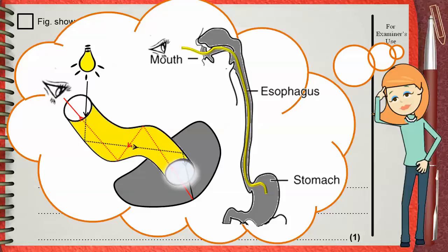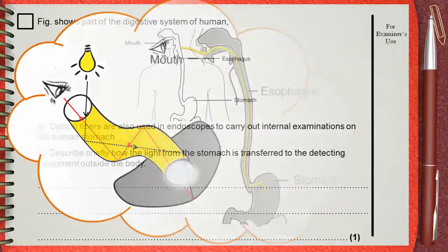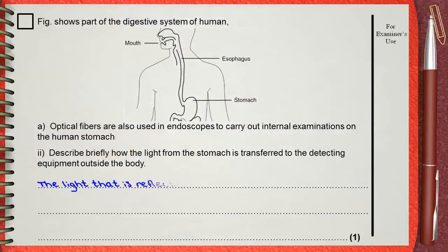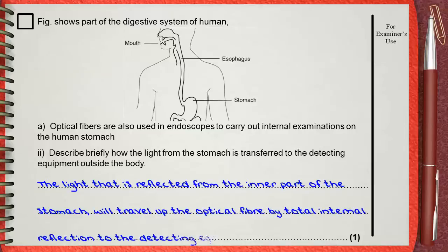This is how we can see the inside of the stomach. So we say that the light that is reflected from the inner part of the stomach will travel up the optical fiber by total internal reflection to the detecting equipment.